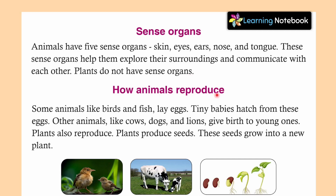Next, how animals reproduce. Some animals like birds and fish lay eggs. Tiny babies hatch from these eggs. कुछ animals ऐसे होते हैं जैसे की birds और fish — ये अंडे देते हैं, और इन अंडों में से babies hatch out करते हैं. Other animals like cows, dogs, lions give birth to young ones. बहुत सारे animals ऐसे होते हैं जो सीधा young ones को ही पैदा करते हैं — जैसे cow, dog, lion, cat, tiger, bear.